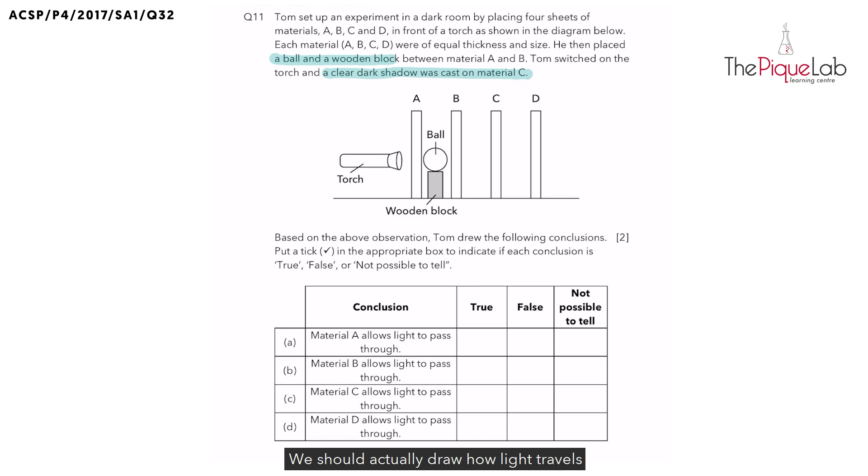We should actually draw how light travels in order for the shadow to be cast on material C. How do we show how light travels? We will draw light rays. Take out a pencil, take out a ruler, we're going to draw how light travels to form the shadow cast on material C.